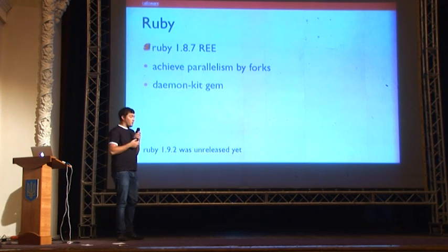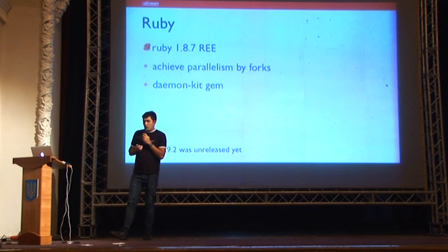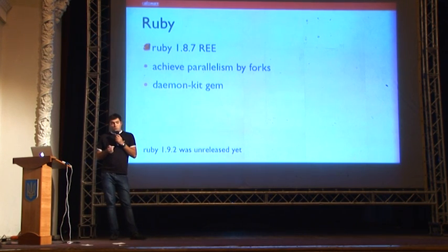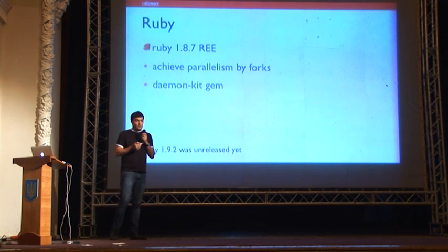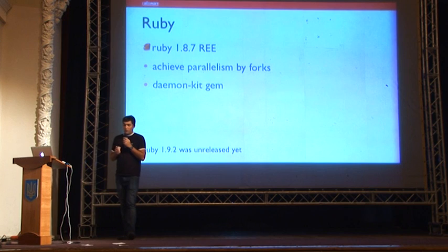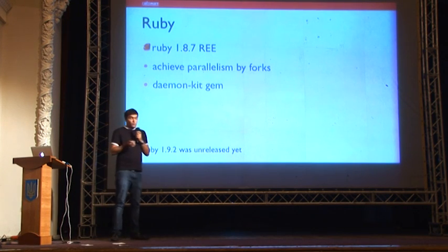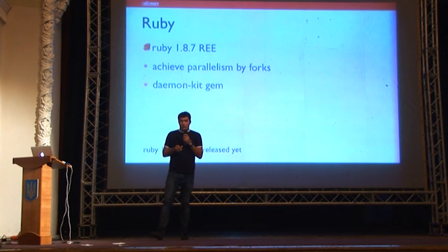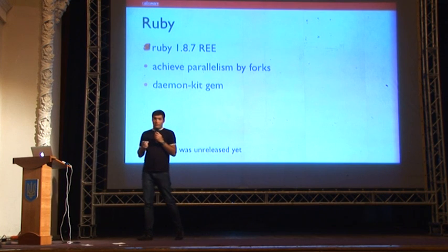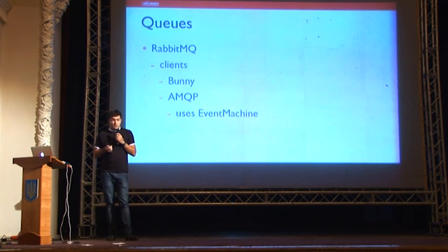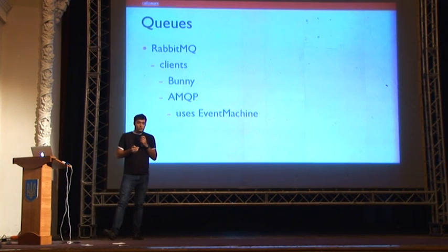As we are a Ruby company, we chose Ruby Enterprise Edition. Because it was 2010 and Ruby 1.9.2 was unreleased, we used 1.8.6 Enterprise Edition. Since Ruby has no true parallelism, we used forks of application processes to achieve it. To handle peak load, we built a solution using queues and chose RabbitMQ.